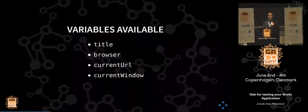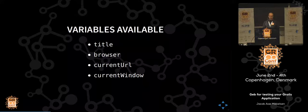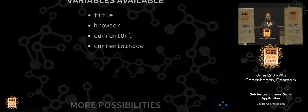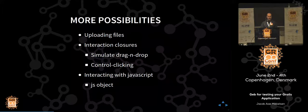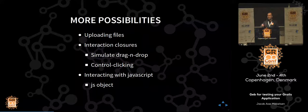More things available: when you're at a browser page, you can extract its title as a variable, use the underlying browser element, extract the current URL, and mess with the current window if you need to enlarge or shrink it. You can upload files — a bit tricky — and I'll show you one way to do that, both for uploading and downloading later. You have closures where you can simulate drag and drop, pushing a button, moving it somewhere, and releasing — done in one movement.